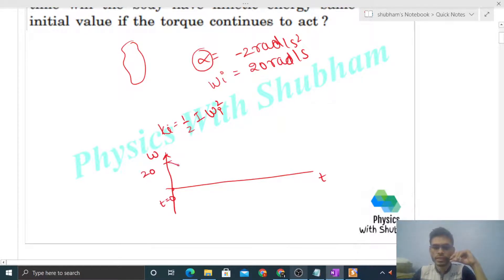Time increases, it will reach where it becomes zero, right? Then if torque continues, then its angular velocity will increase in the negative direction. Negative omega means it's rotating in the opposite direction from initially. So it will continue downward in the graph.